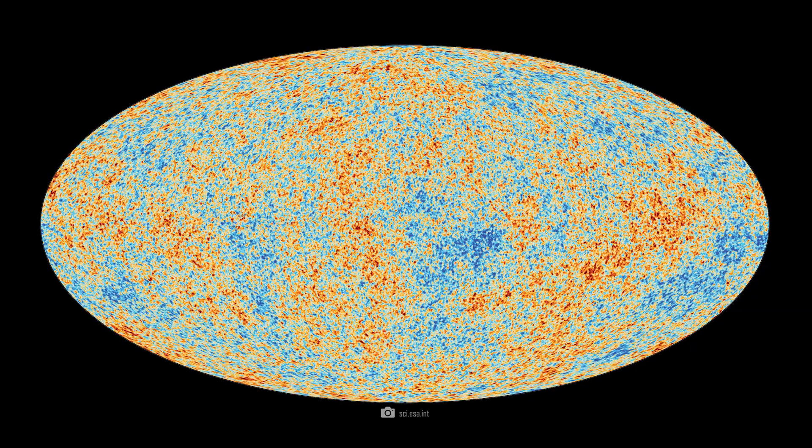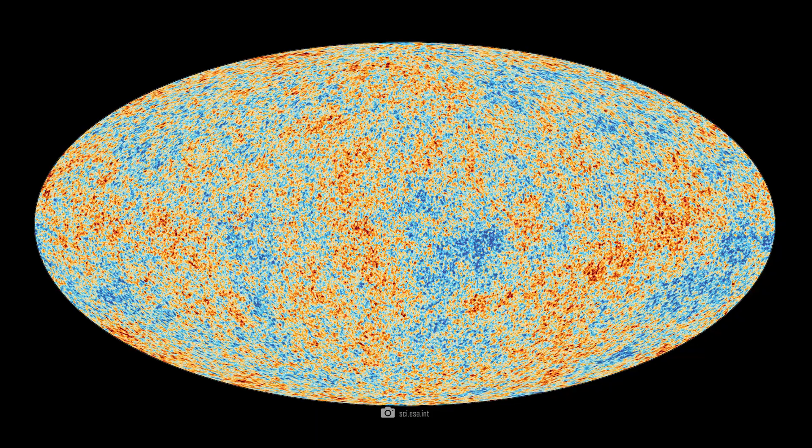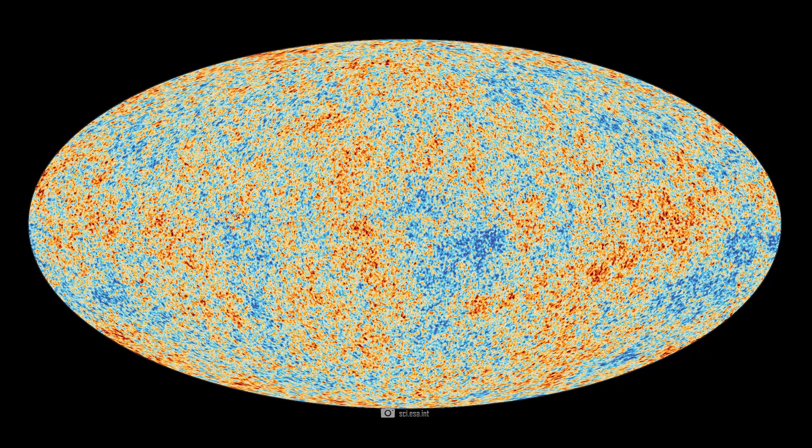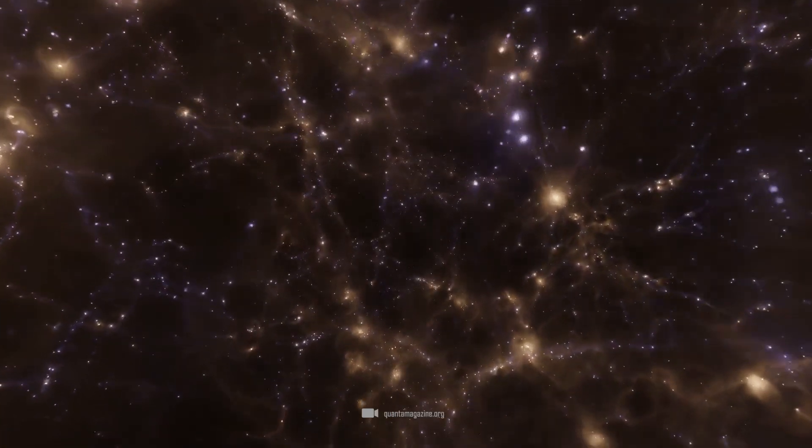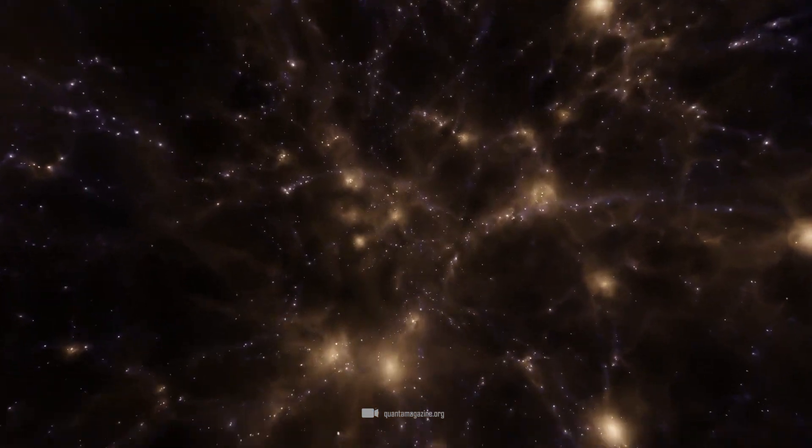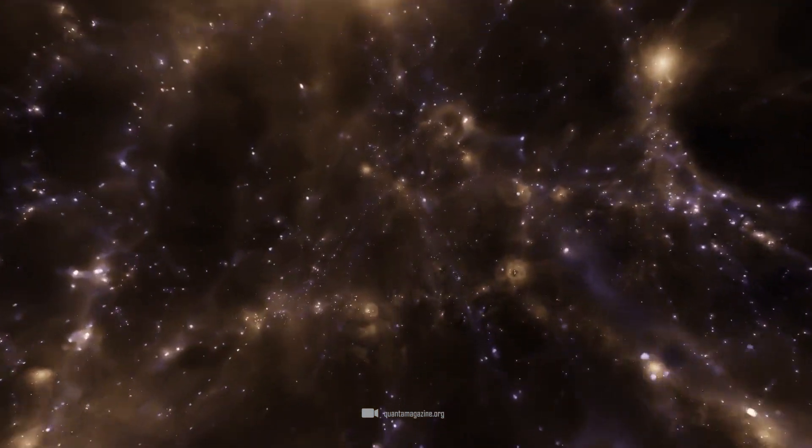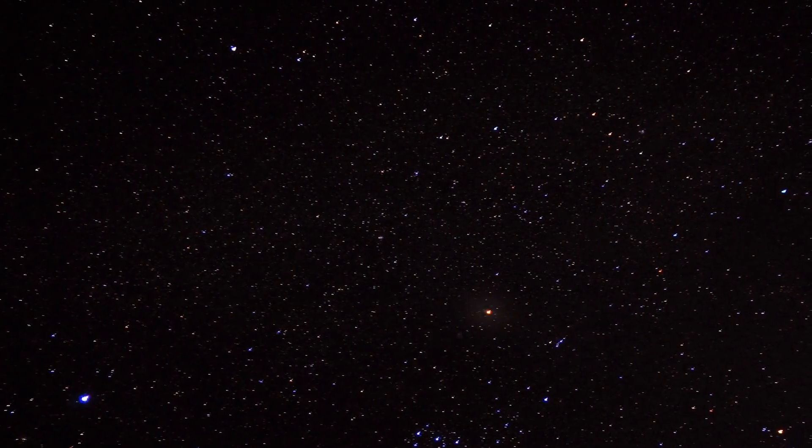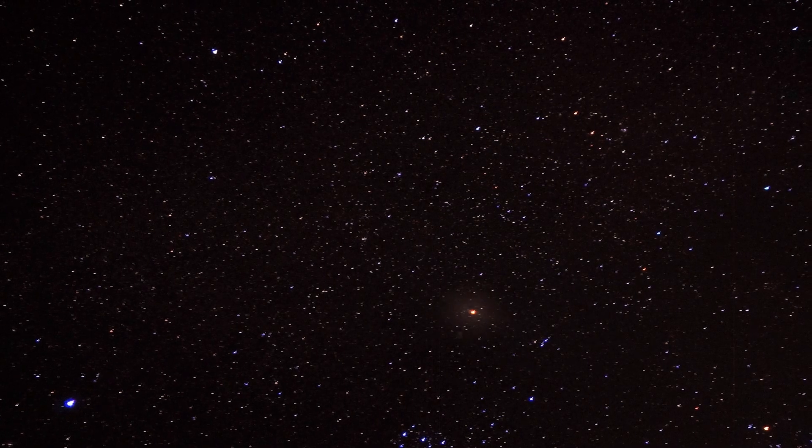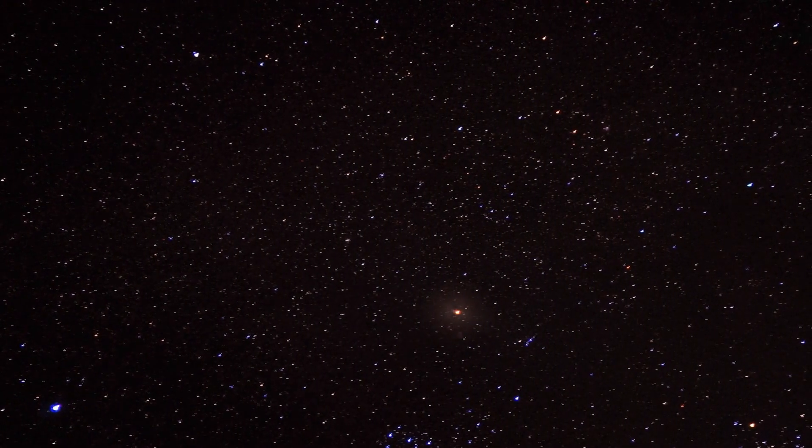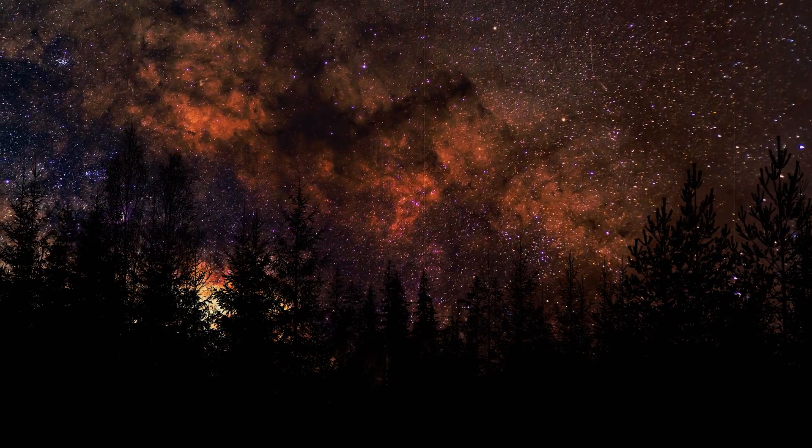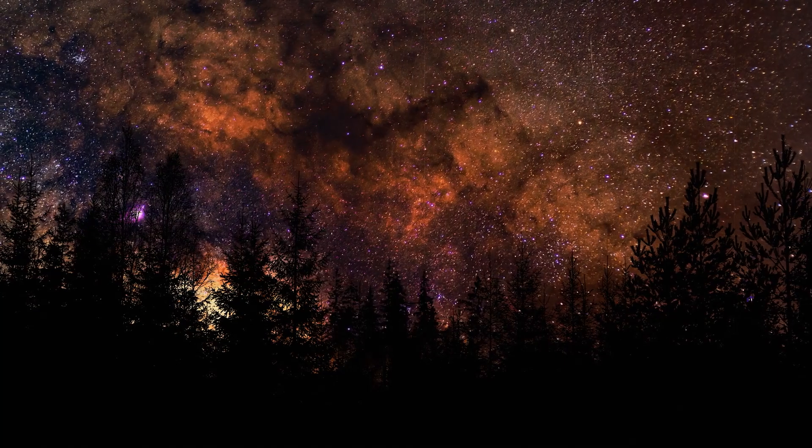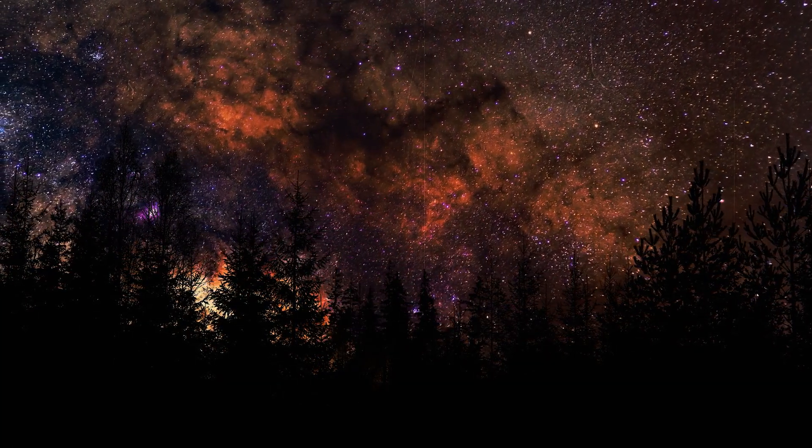The cosmic microwave background, which we use today as a kind of map of the universe, is said to have been created during this phase, and we also used it to reconstruct the early history of the universe. In the 100 million years following the recombination event, the dark ages prevailed, in which there were no stars or galaxies. The universe was dark and consisted mainly of neutral hydrogen and helium.